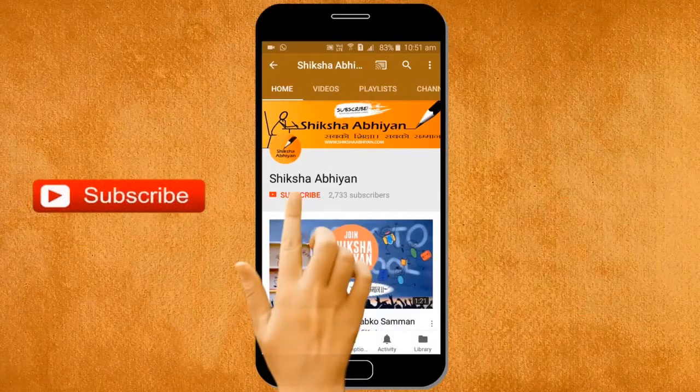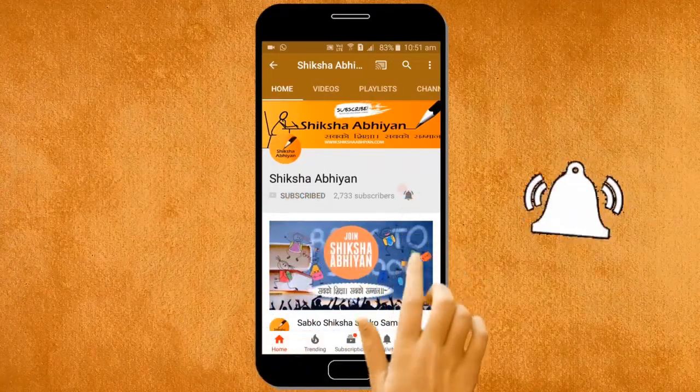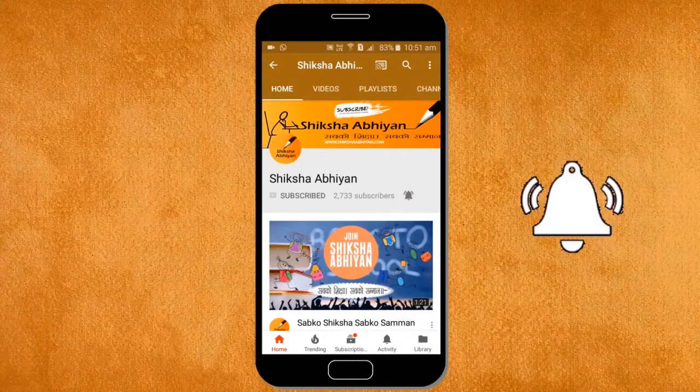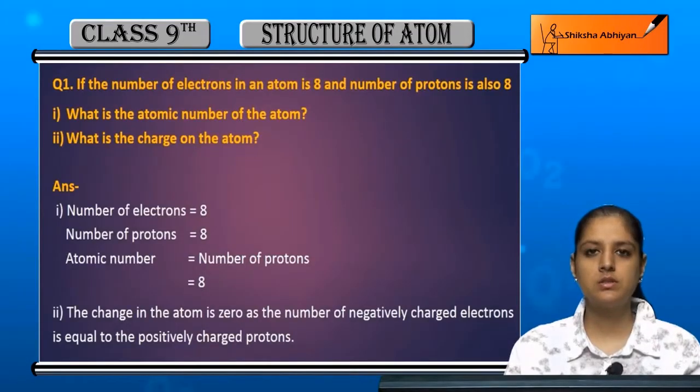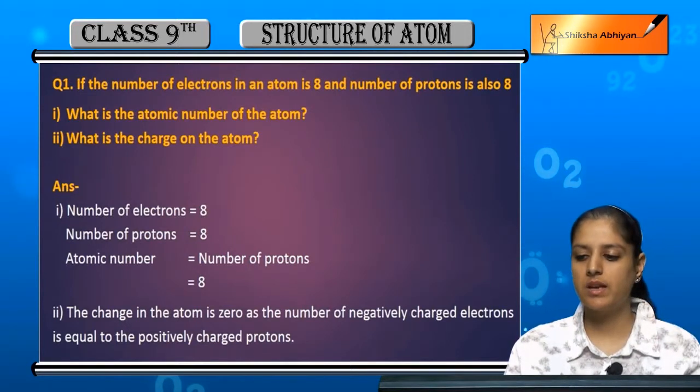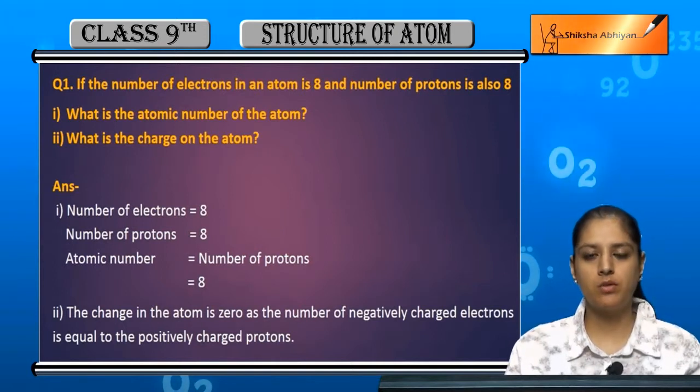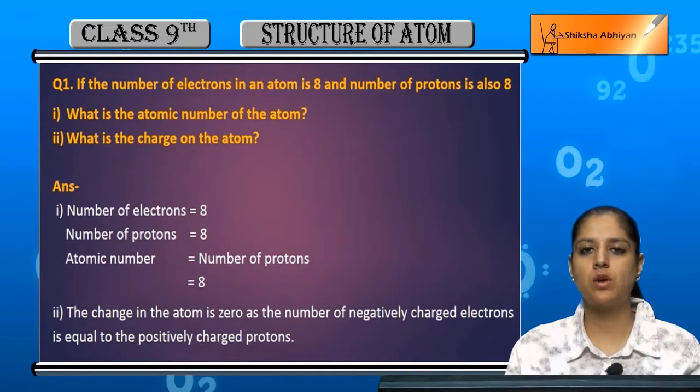Subscribe to our channel by clicking the subscribe button, click the bell button and enjoy the latest uploads from our channel. Now a question: Question number one - if the number of electrons in an atom is eight and number of protons is also eight, what is the atomic number of that atom and what is the charge of that atom?